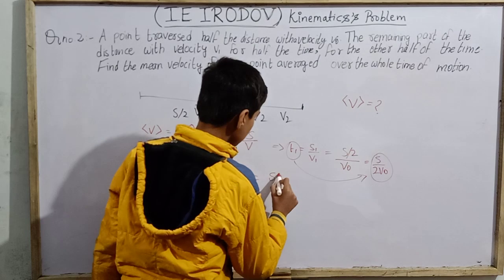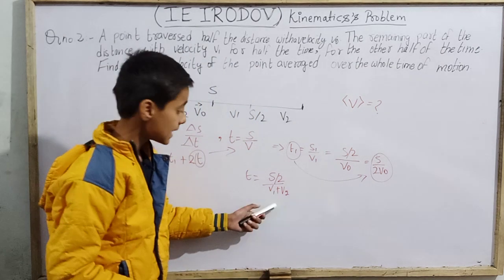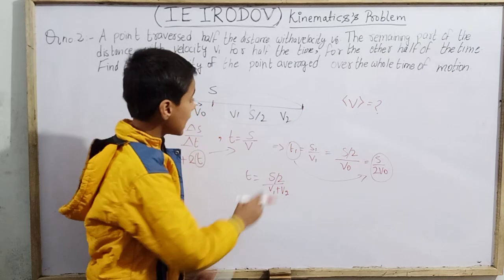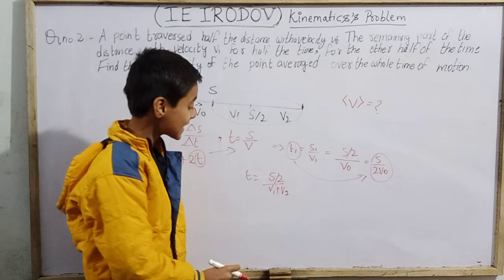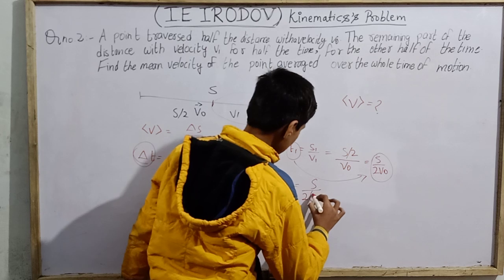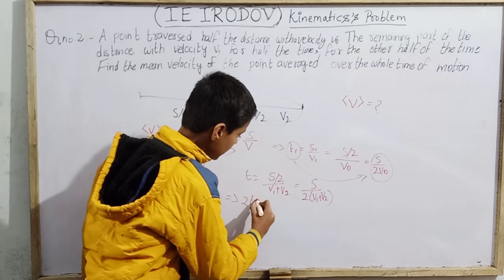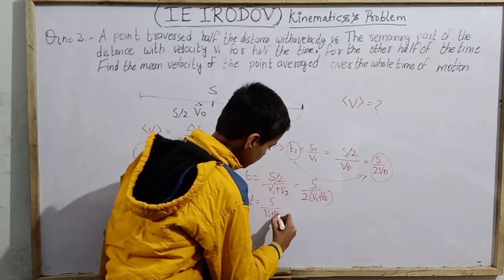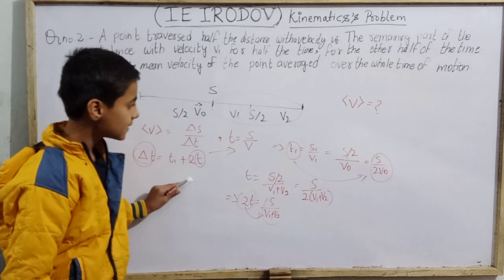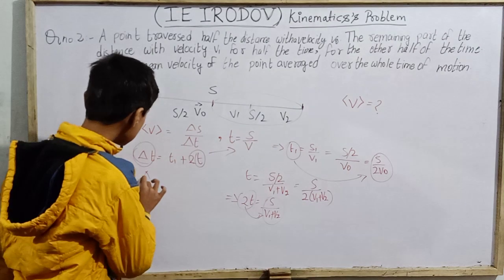Now for the remaining S/2, the distance is covered — half the time with V1 and half the time with V2. This gives us: 2t = S/2 divided by the combined expression (V1 + V2), which simplifies to S divided by (V1 + V2). That is the direct value of 2t.